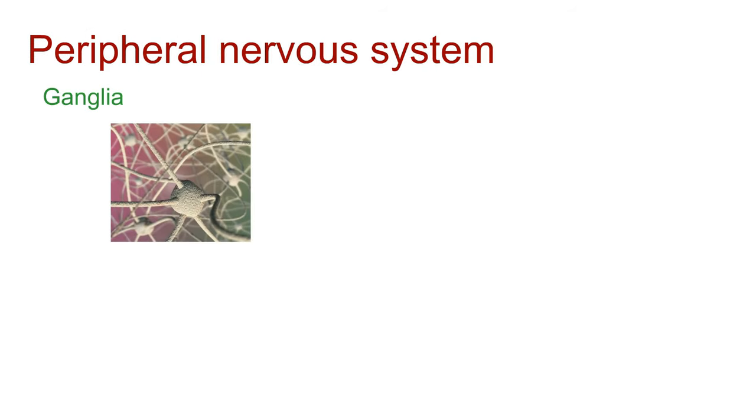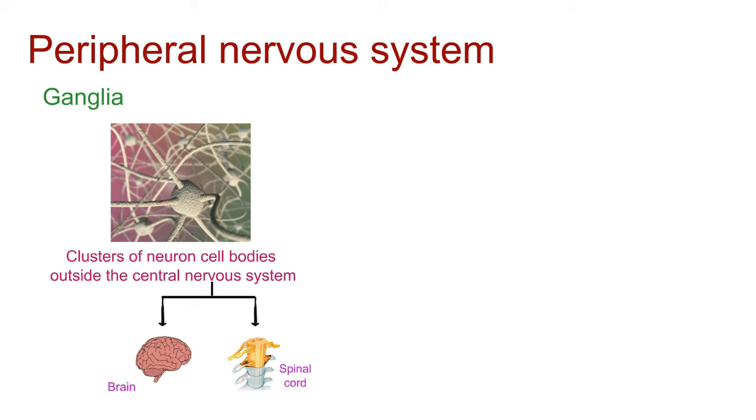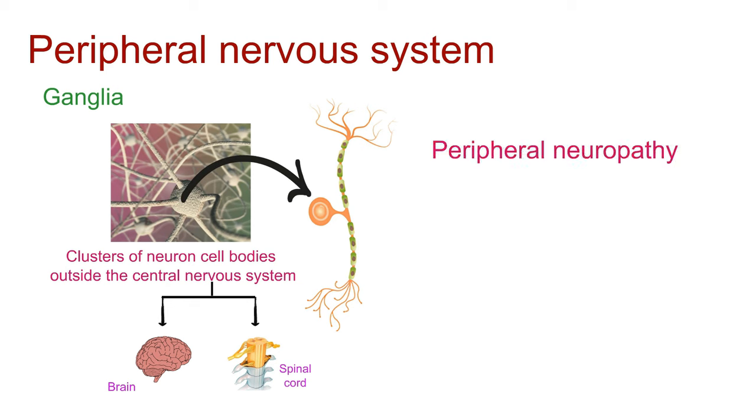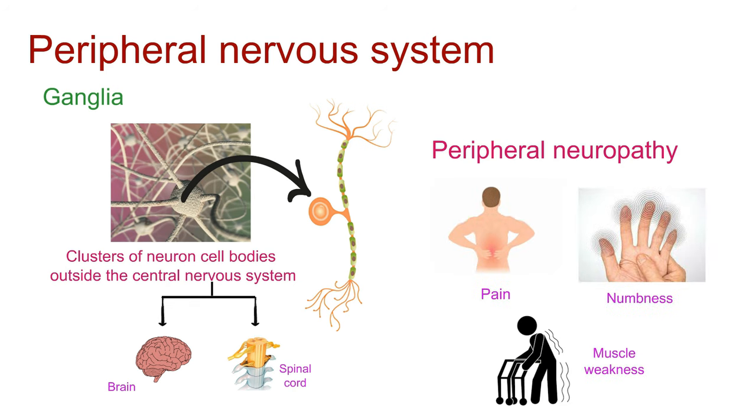Don't forget about ganglia. These are clusters of neuron cell bodies outside the central nervous system. They house cell bodies associated with sensory neurons. But, what happens when things go awry? Conditions like peripheral neuropathy can affect the PNS, leading to symptoms like pain, numbness, and muscle weakness.